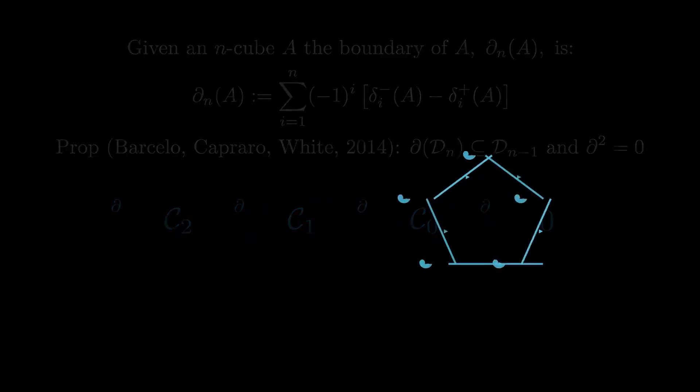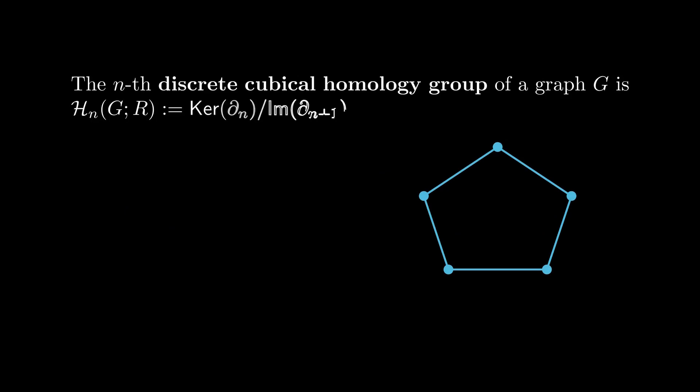We can now finally define the n-th discrete cubical homology group of a graph g, and this is defined as the kernel of the n-th boundary map quotiented by the image of the n-plus-1 map. And again, this makes sense because the boundary squared was equal to 0, so the image of the n-plus-1 map must be contained in the kernel of the n-th map.